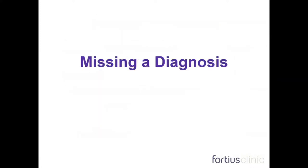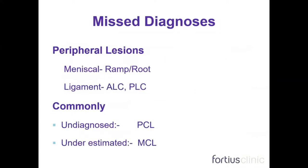Misdiagnoses are also a challenge. When faced with an ACL-deficient knee, it is critical to go out of your way to look for potential missed lesions. If missed at index surgery, these significantly predispose to the risk of graft re-rupture by at least an order of magnitude. These lesions include meniscal ramp lesions, posteromedial meniscal capsular tears, meniscal root lesions, and the risk of anterolateral corner or posterolateral corner instability. Other commonly underdiagnosed lesions include PCL injuries and MCL injuries.